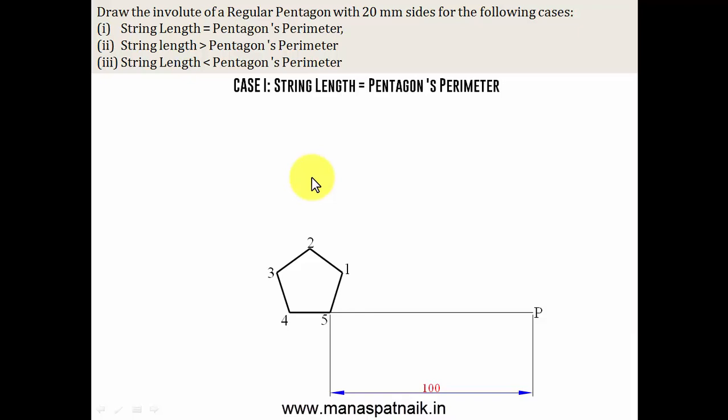Now, guys, whenever we deal with problems based on involute, we either go for winding or unwinding. In that process, we will be winding a string whose length is 100mm, equal to pentagon's perimeter. And when we do so, this corner number 1 is going to have an impression over the string somewhere here, approximately. This corner 2 is going to have an impression over here. And in that process, you will observe that this line or the string automatically gets divided into five equal parts. So, our objective right now is to divide the string into five equal parts.